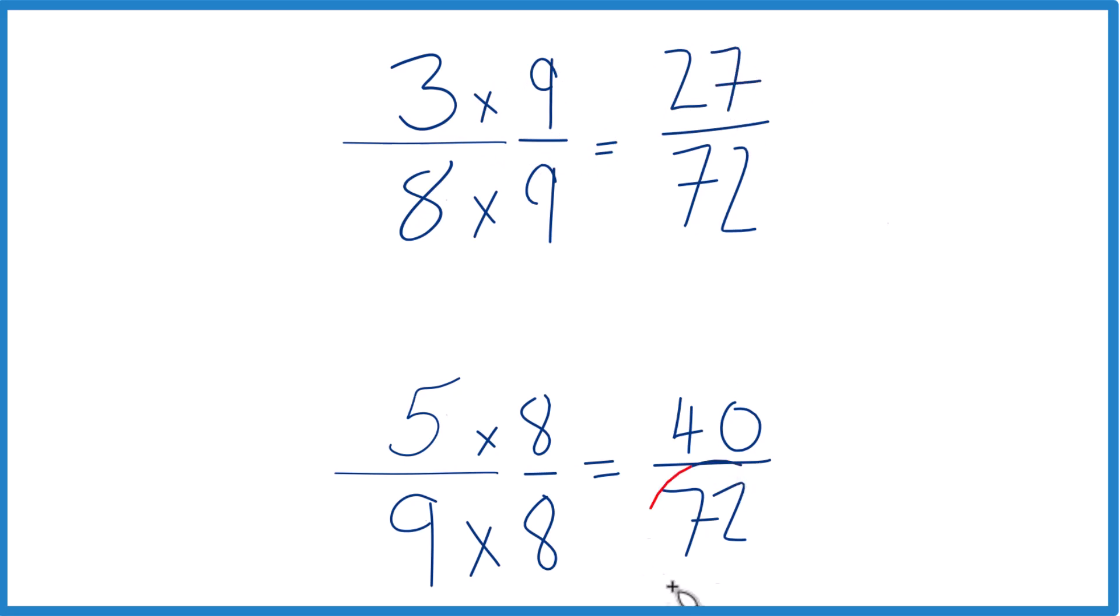Since we have the same denominator, we just compare the numerators. So 40 is greater than 27. So 40 seventy-seconds, that's going to be greater than 27 seventy-seconds. And since these are equivalent here, and these are equivalent here, 5 ninths, that's going to be greater than 3 eighths.